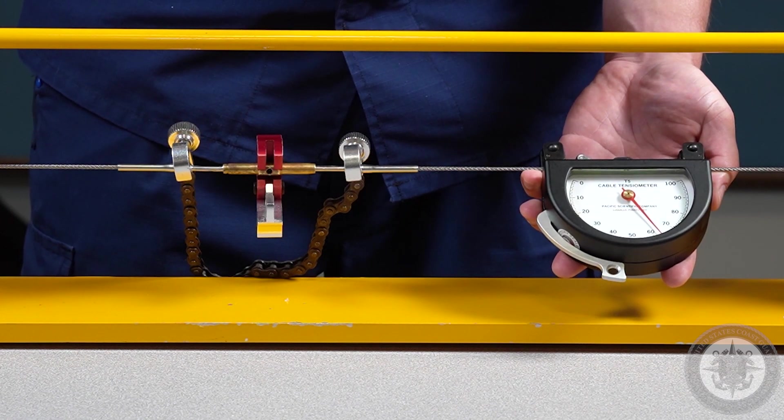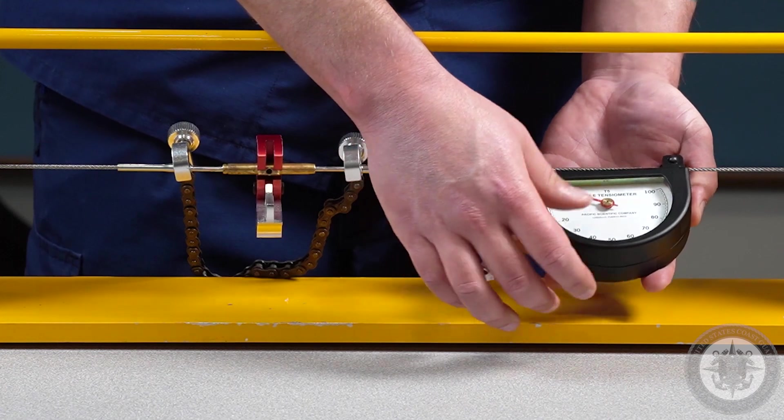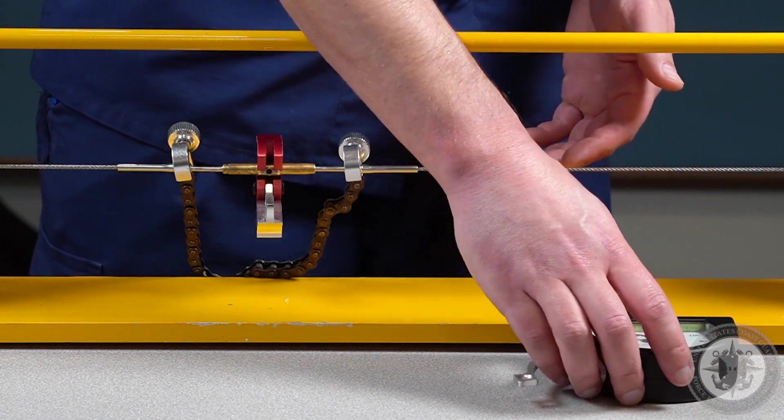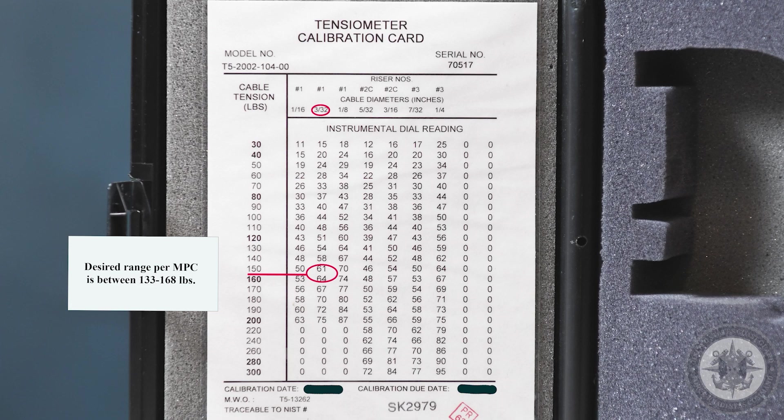So there, our reading on our tensiometer is approximately 63. We will cross reference that number on the tensiometer with our tensiometer calibration card. 63 puts us right within the limitations for this specific cable at the current ambient temperature.